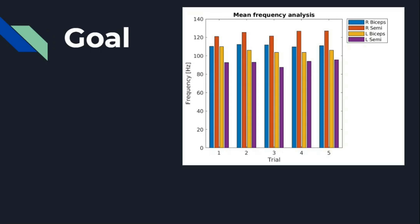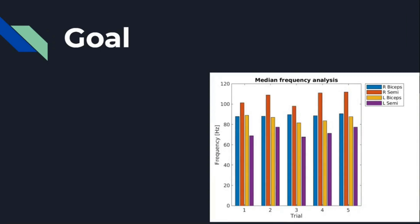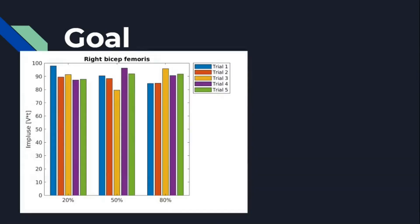For the mean frequency bar plot, you can see the first group covers both trial 1 through trial 5, with y-axis as frequency in hertz. For median frequency analysis, the principle is the same but using median instead of mean. I also did this analysis for impulse in my previous video — the y-axis should be frequency here.